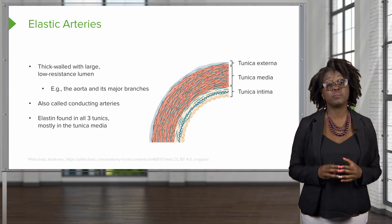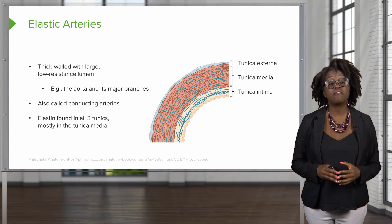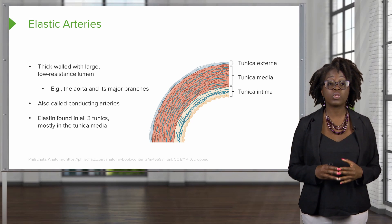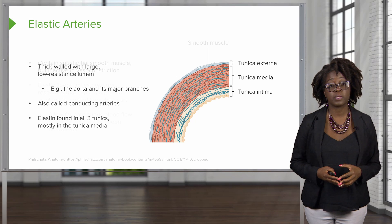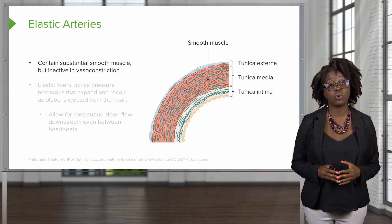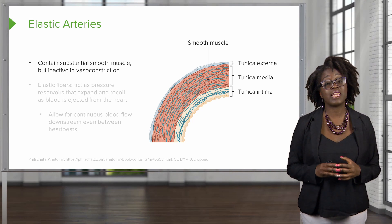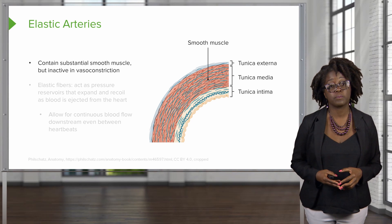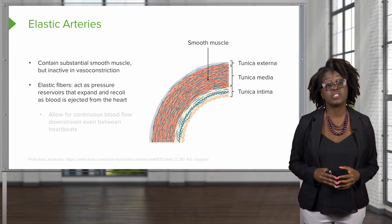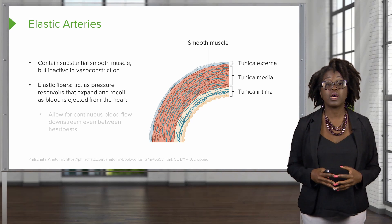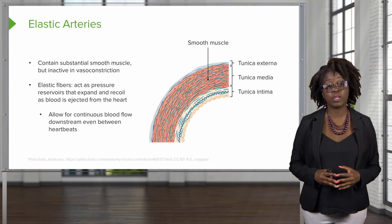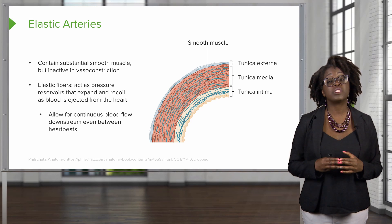Elastin is going to be found in all three tunics of the elastic arteries, but most of the elastin is going to be found in that middle layer, or the tunica media. This contains a substantial amount of smooth muscle, but this smooth muscle is actually inactive during vasoconstriction. The elastic fibers act as pressure reservoirs that expand and recoil as blood is ejected from the heart, which allows for continuous blood flow downstream even between heartbeats.